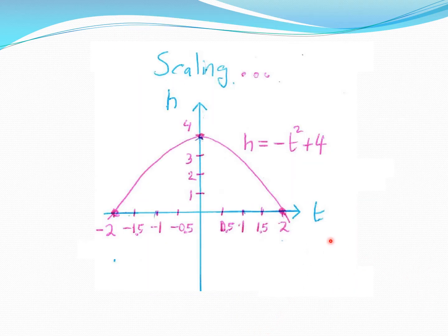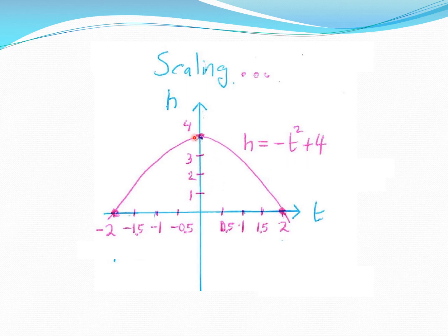Let's take a break and discuss scaling. Consider the parabola h = −t² + 4, plotted with the t-axis going up in steps of 0.5. At t = 0, h = 4. At t = 2, h = −4 + 4 = 0. At t = 1, h = −1 + 4 = 3. This matches the graph shape. The root is at t = ±2.